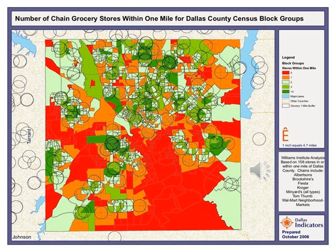This map was created by Berg and Murdoch, included as a comparison to our previous slide. It shows the number of chain grocery stores within one mile for Dallas County's Census Block Groups, where red indicates zero stores. The southern region is predominantly red, indicating no chain grocery stores in that area, which is a problem because many smaller convenience stores do not offer fresh produce and healthy food and drinks.